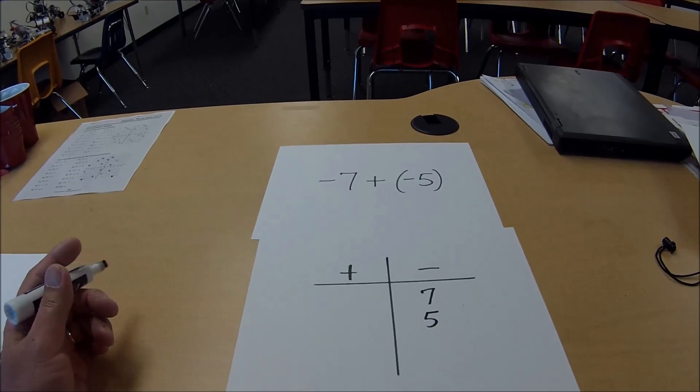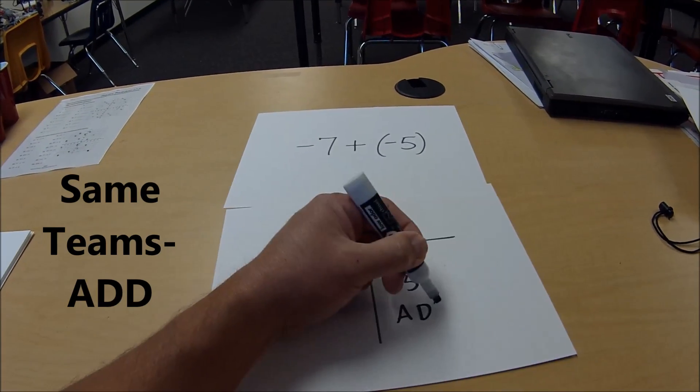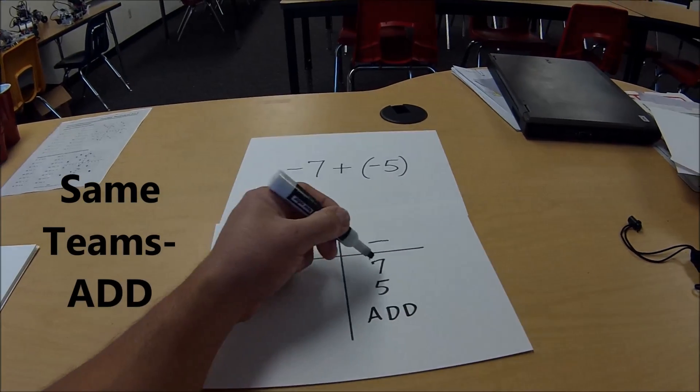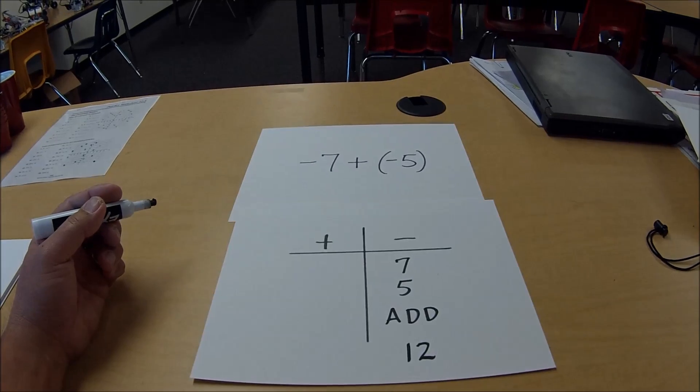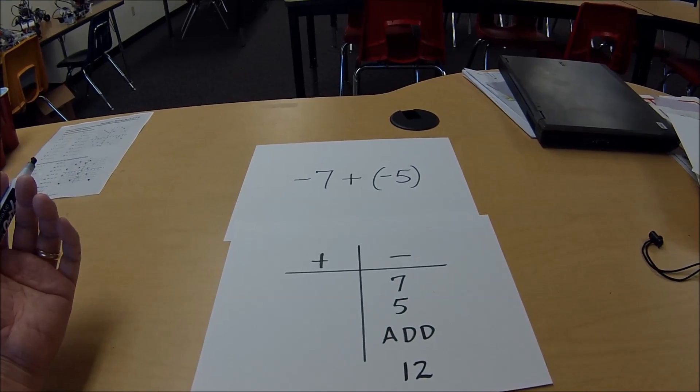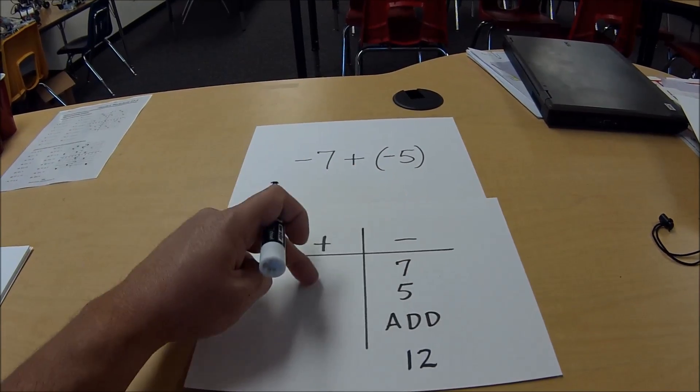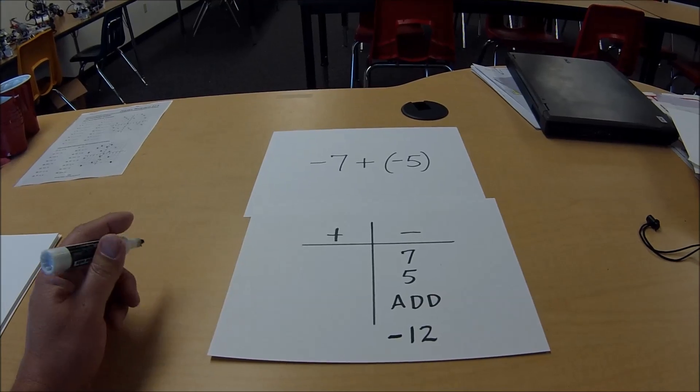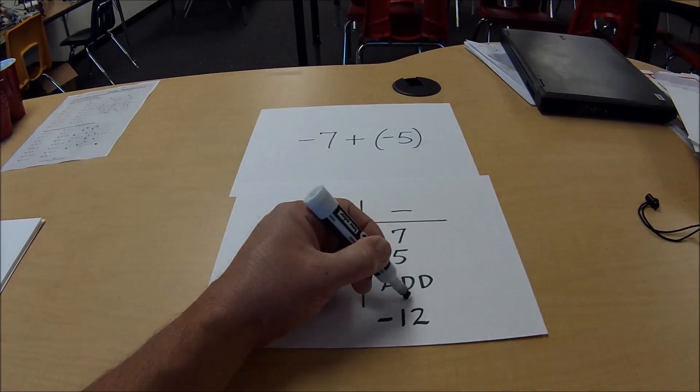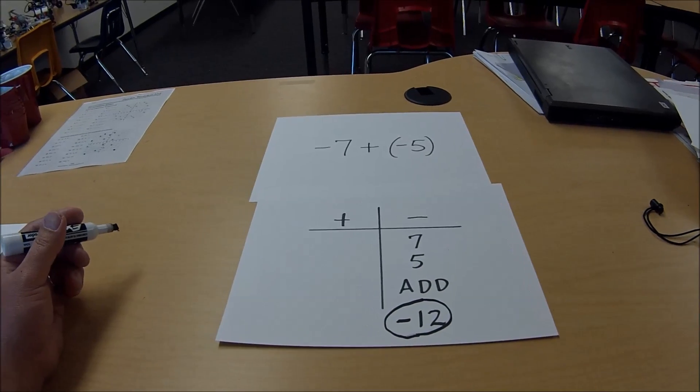And so the rule for that now is if they're on the same team, we would add. So 7 plus 5 is 12. And again, the rule is the team with the most points wins. And since the negative team has all the points and positive has nothing, it would keep the sign of the winning team. So the answer to negative 7 plus a negative 5 would be a negative 12.